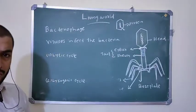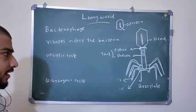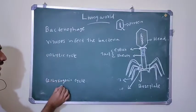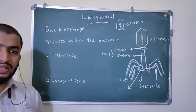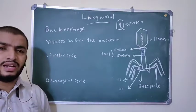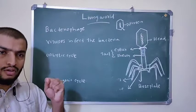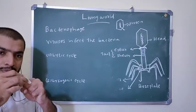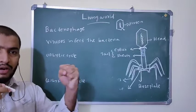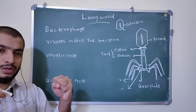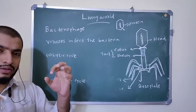T4 Bacteriophages show two types of life cycle: lytic cycle and lysogenic cycle. What is the difference between them? Bacteriophage which infect bacteria living under favorable conditions — where food availability is high — multiply and produce more bacteria.